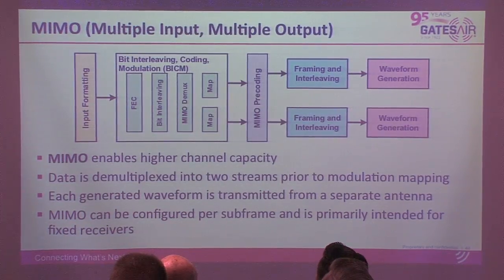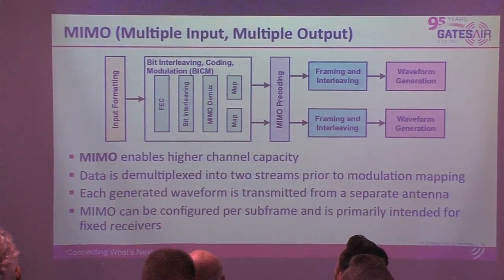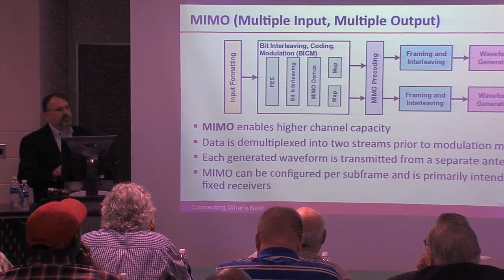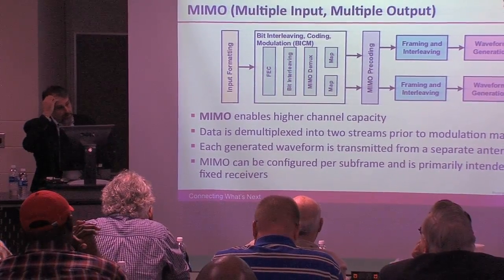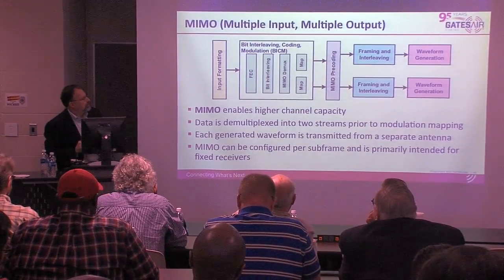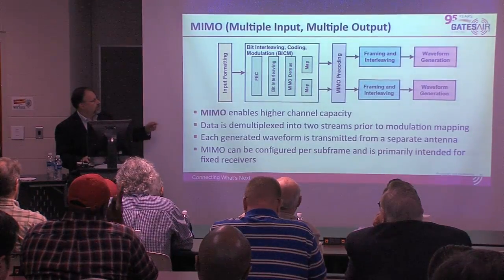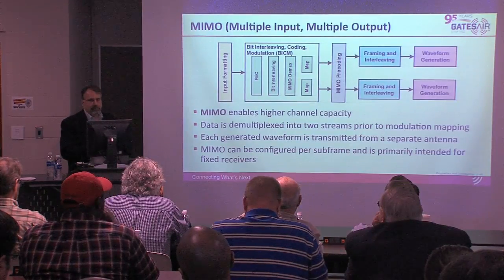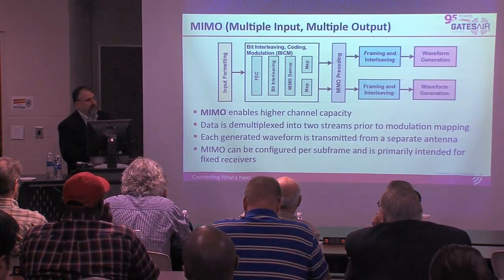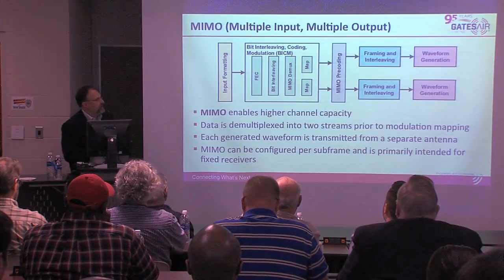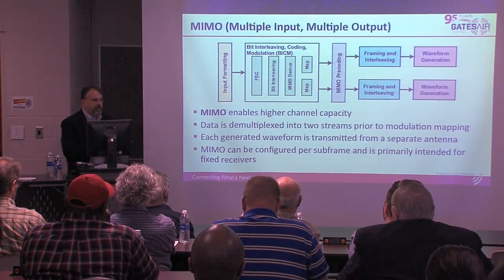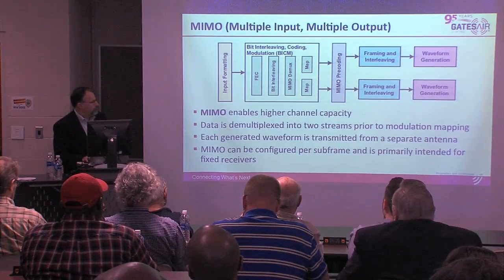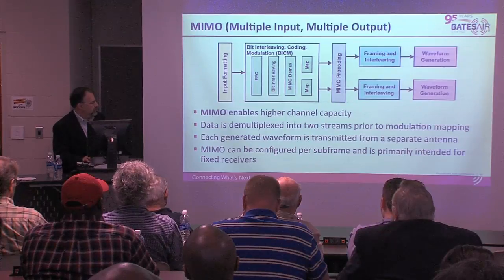MIMO is an optional feature — multiple input, multiple output, meaning multiple transmit antennas and multiple receive antennas. It enables higher channel capacity. Data is demultiplexed into two streams prior to modulation mapping, and each generated waveform is transmitted by a separate antenna. MIMO can be configured per subframe and is primarily intended for fixed receivers, not mobile.